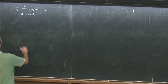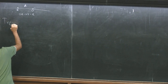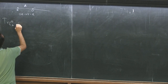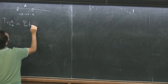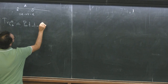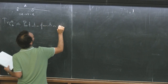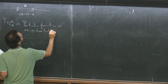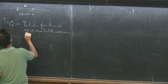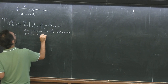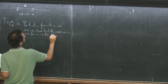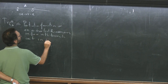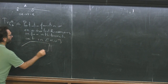As we already discussed at length, calculating trace of ρ_A to the n in this geometry is the same as the partition function on an n-sheeted Riemann surface with branch cut on the interval U and V. And you remember it was this geometry here.